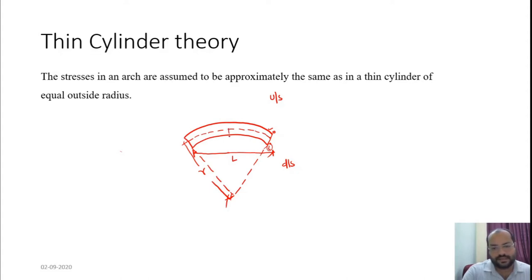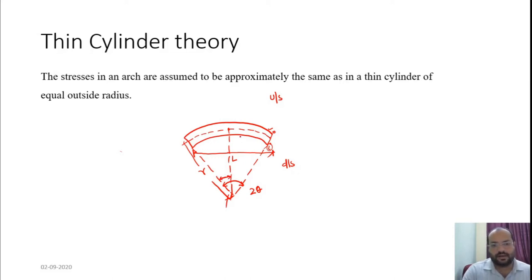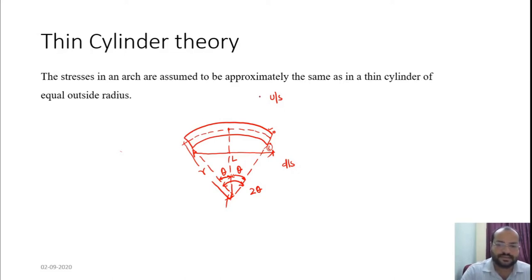The center line divides the total central angle 2θ into two equal halves, giving θ on each side. Since this is a plan view, the water will be exerting pressure on the upstream face of the dam. The intensity of this water pressure is p, and the equivalent horizontal pressure is E_h.